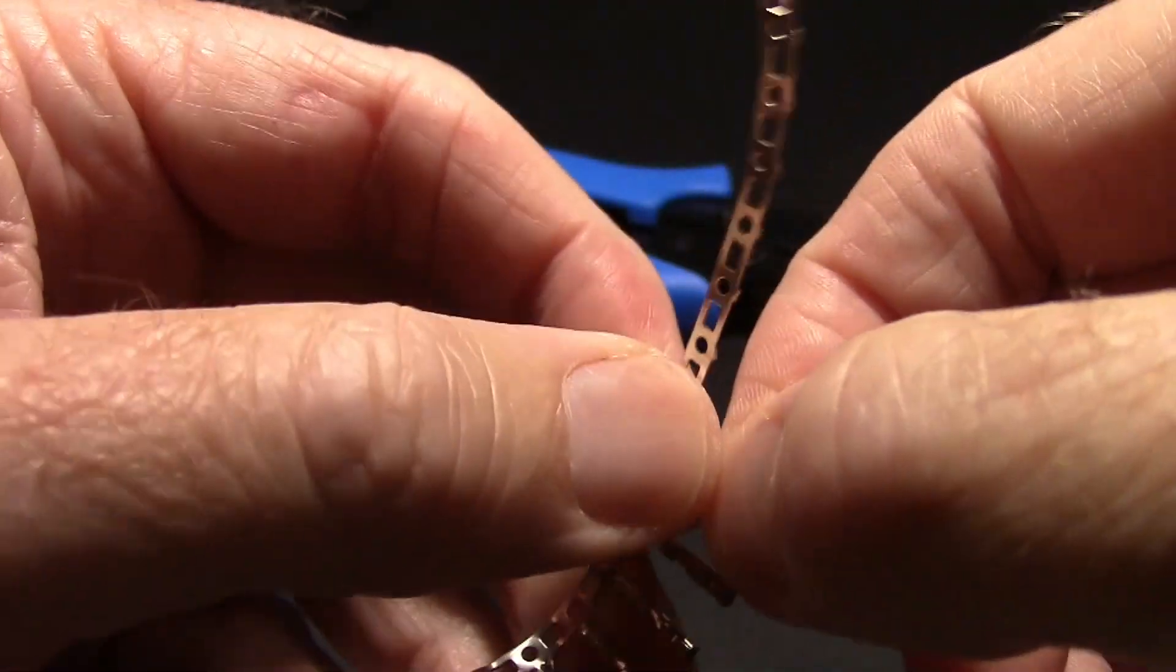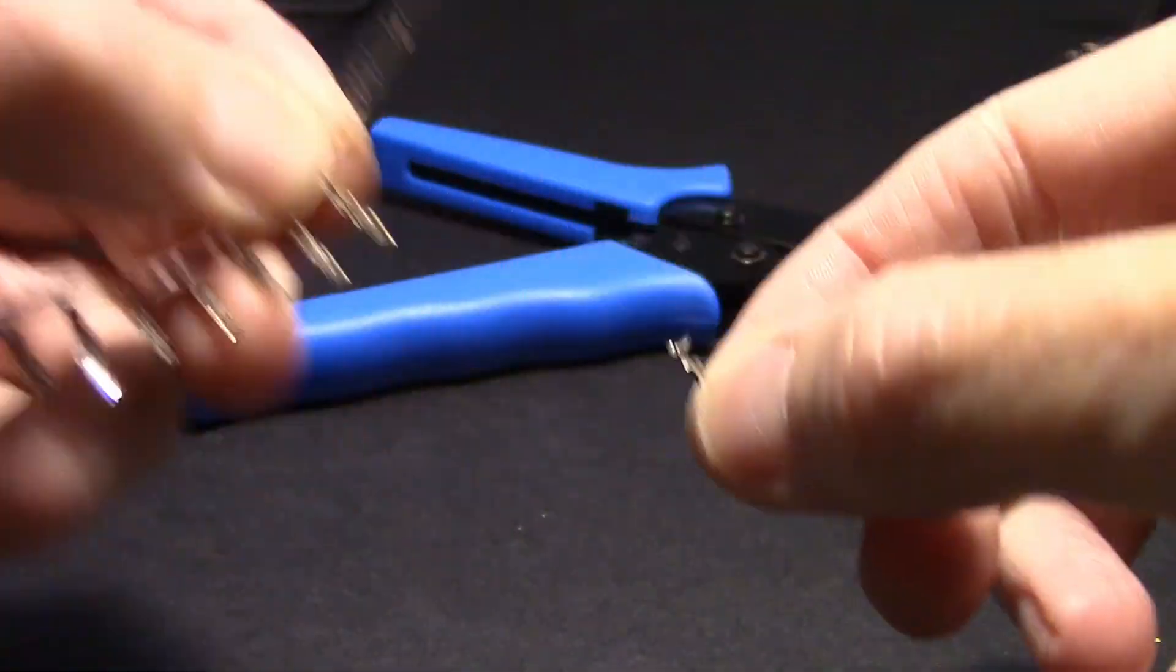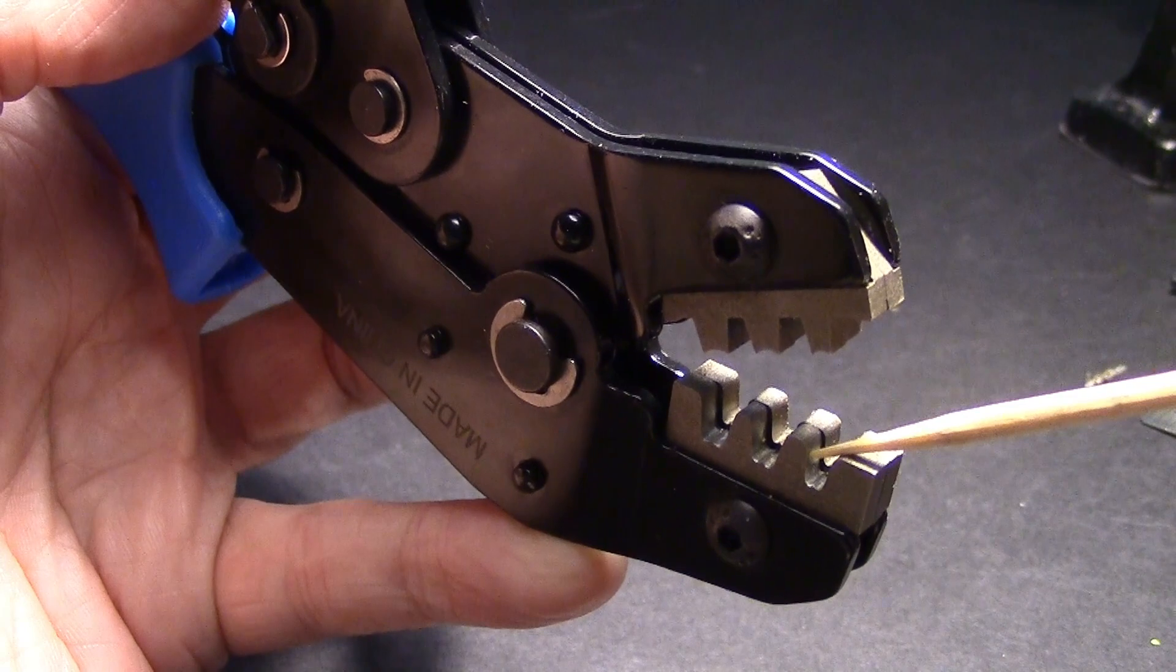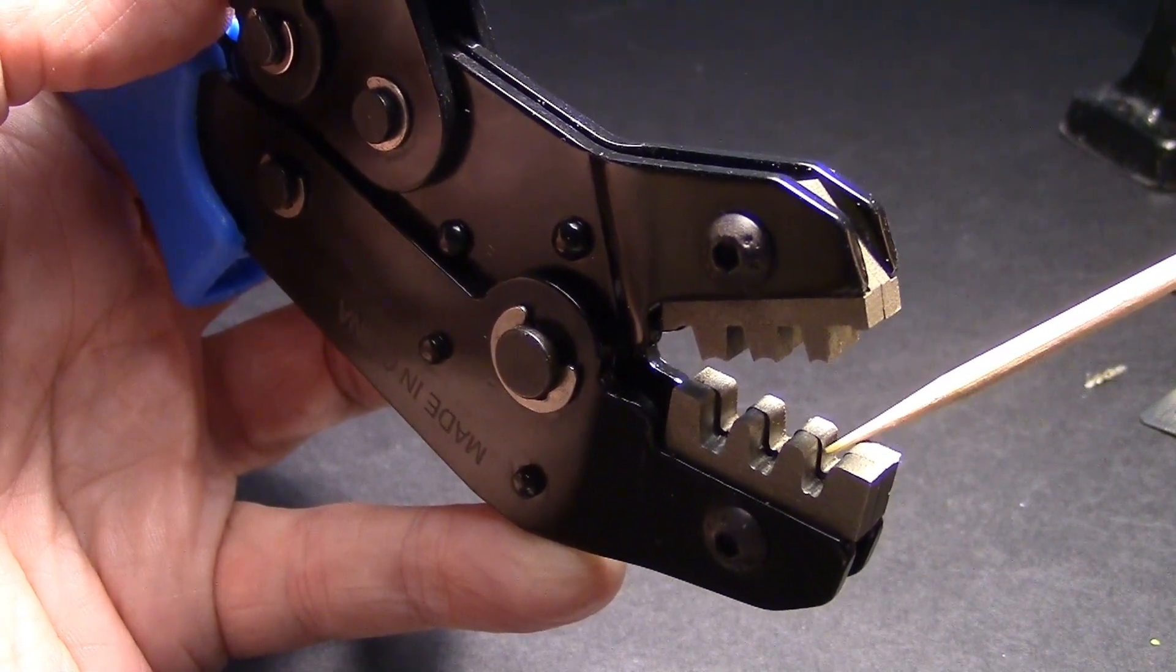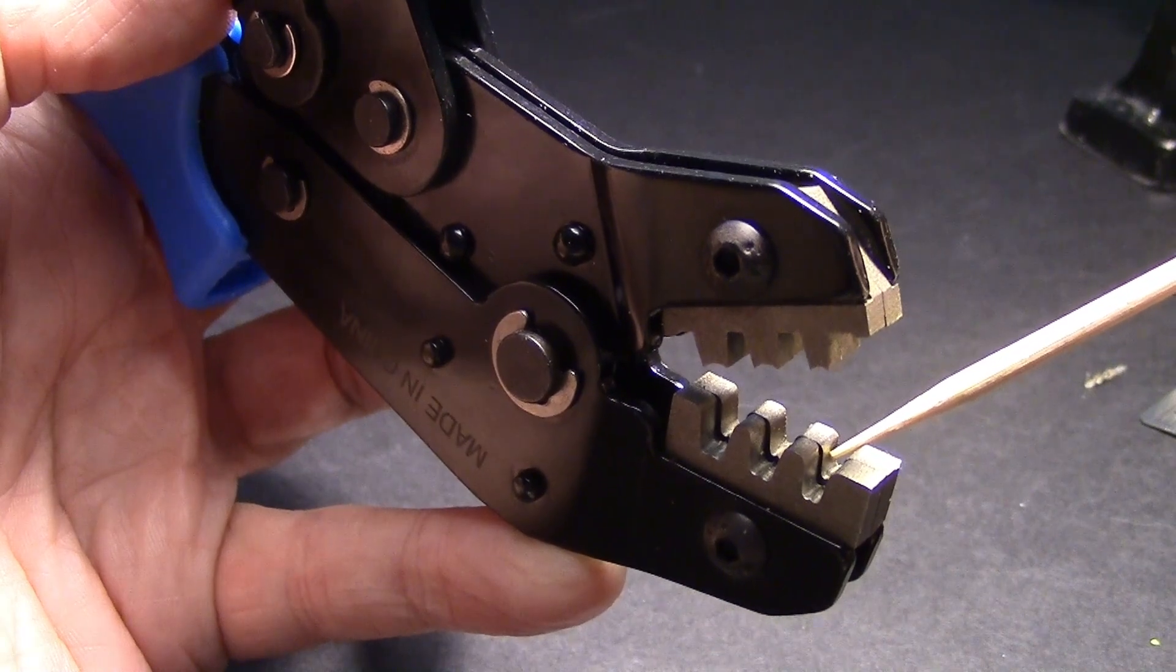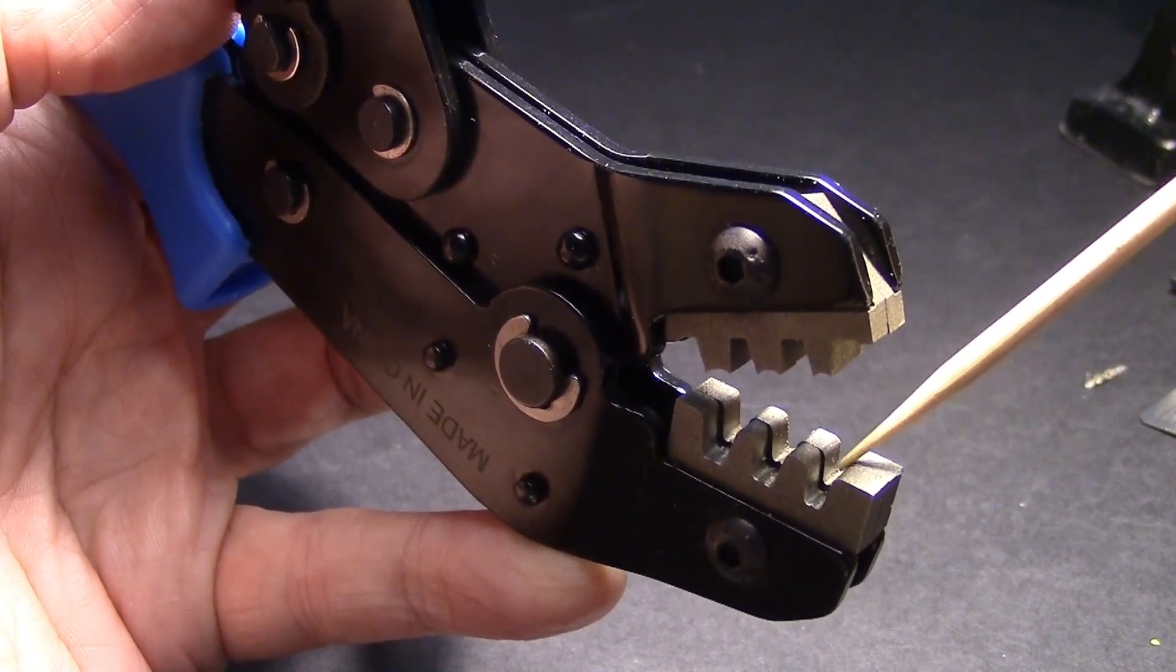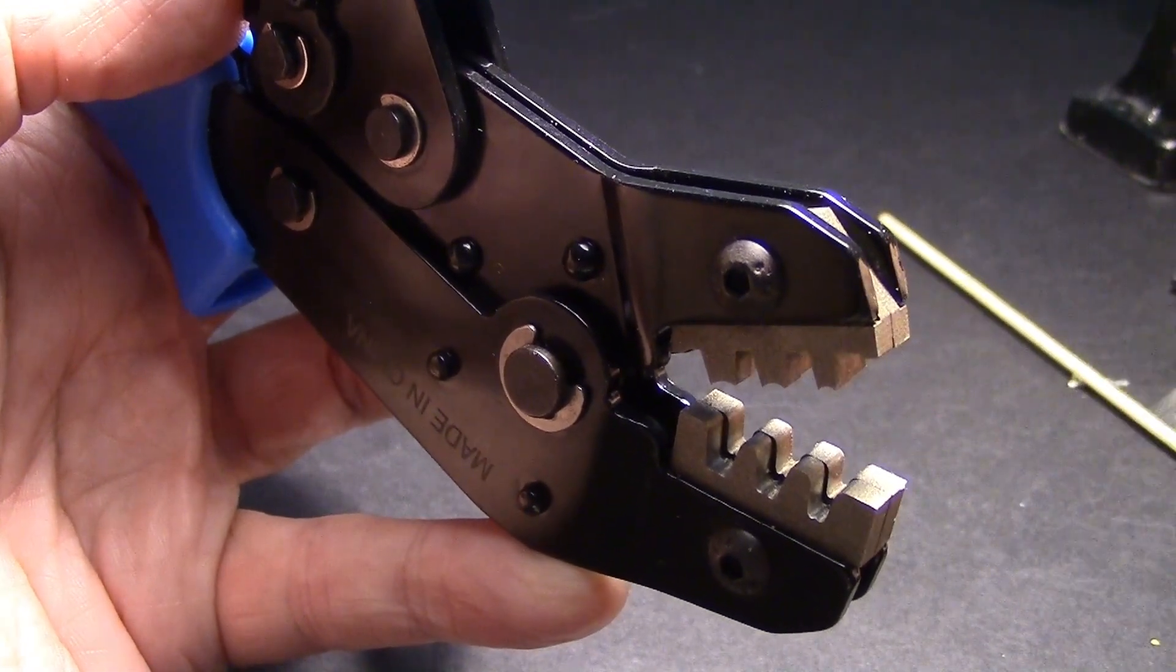Break off one of the female crimp ends. I'm going to be using the smallest section of the crimp tool right here. Now you'll notice that one side of the socket here is higher than the other side. See that little rim right there? This side, this half sticks up more than the other. That's the important part.